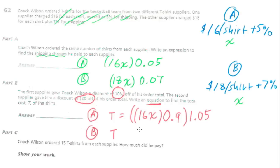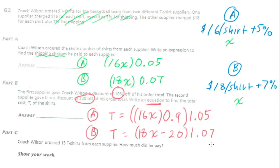For Supplier B, the total cost was $18 per shirt. The discount is $20 off, so I subtract 20, then multiply by 1.07 because 7% is the shipping. So T = (18X − 20)(1.07). That is our equation for B.